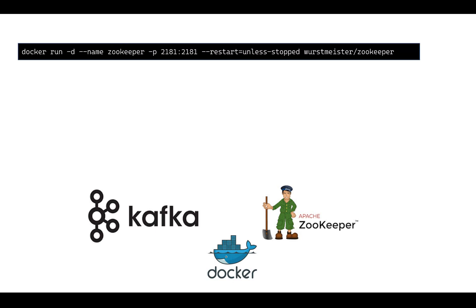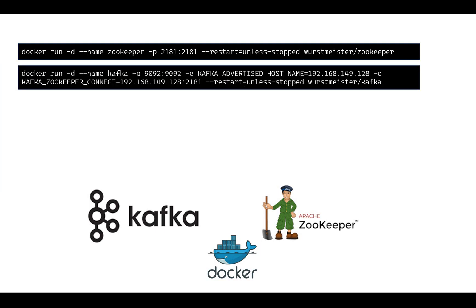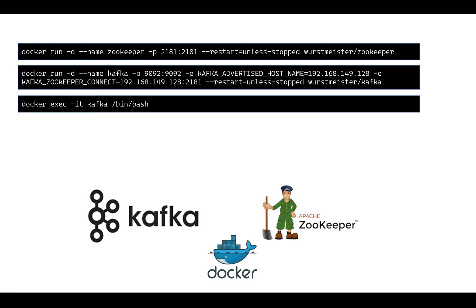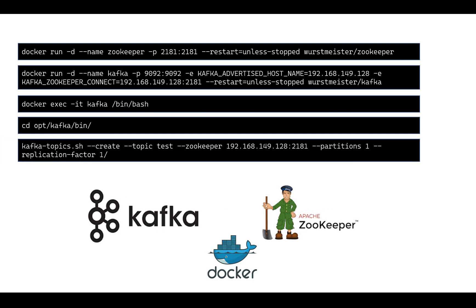I will be running manual commands to create the Docker container for ZooKeeper. I'll describe what each command does and what all the parameters mean. We'll also run a command for creating the Kafka container, and I'll explain the IP address and other parameters. Then we will go to the Kafka container, navigate to the shell files, create a topic, and list it to see how ZooKeeper and Kafka interact.